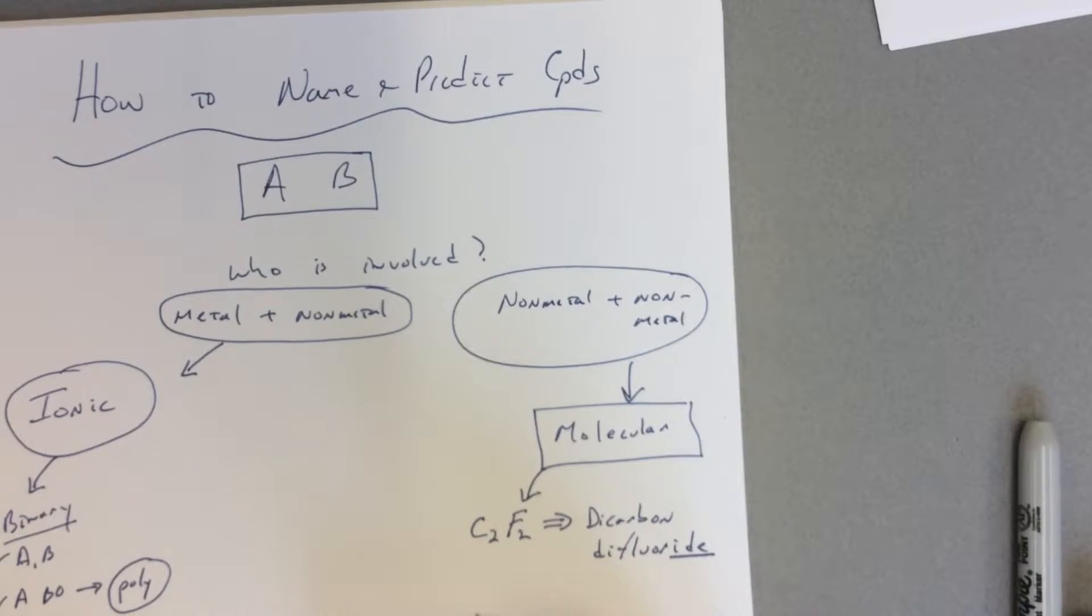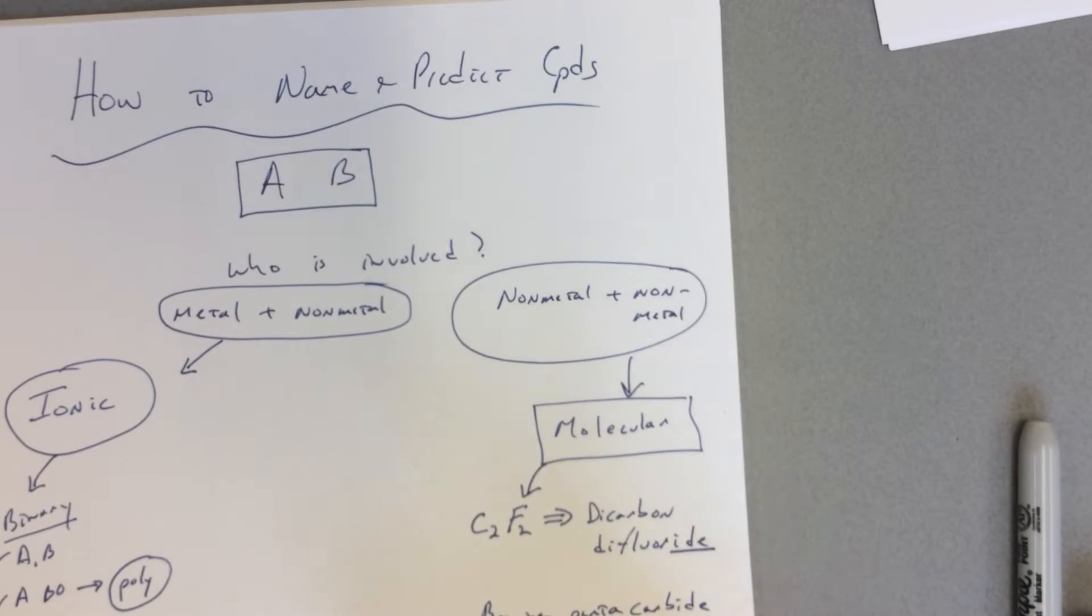If we're given the name, say something like bromine pentacarbide, then we're just deducing from the prefixes. No prefix here means one, penta means five, so our formula is Br and carbide is carbon C5.